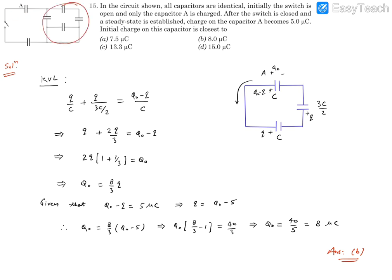So let's say initial charge on this capacitor was Q0 on A. Now we can simplify this network. How we can simplify? You see this capacitor is connected with a conducting wire, so it will have a potential difference as 0.